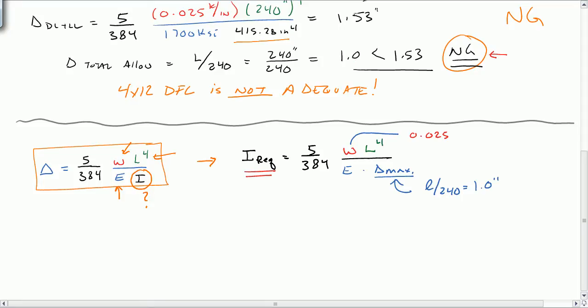And you might even guess it's going to be about, we need about 50% more stiffness. And since there's no powers on the 415, we should end up with a number of about 50% more of 415. So W is 0.025 kips per inch. Again, this is going to stay the same. We still have Doug Fir Larch, so it's 1700 ksi. And we still have 240 inch span. Again, that's a coefficient. So let's go ahead and solve this.